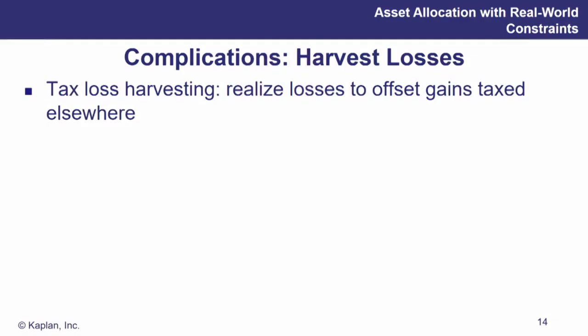The final point on taxes: tax loss harvesting. If I'm selling assets on which I have a capital gain and will have to pay taxes, I can try to offset that by selling other assets on which I have a loss, counteracting those capital gains with capital losses. This helps minimize the tax burden for that period and helps be more efficient in how I deal with taxes in the portfolio.